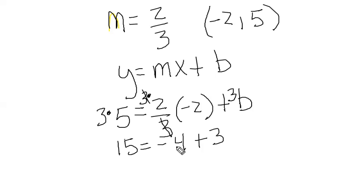Now we're going to add 4 to both sides and we get 19 equals 3b. What I'm going to do is divide both sides by 3, and I get b equals 19/3.